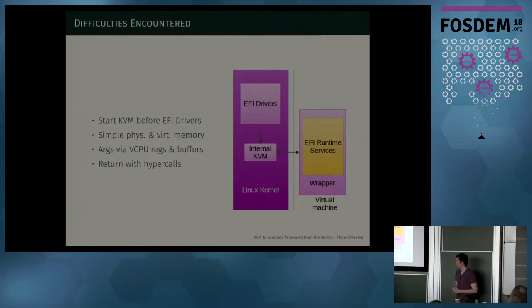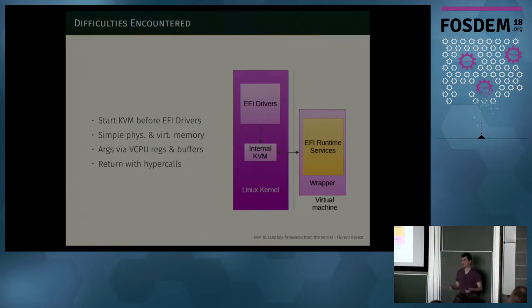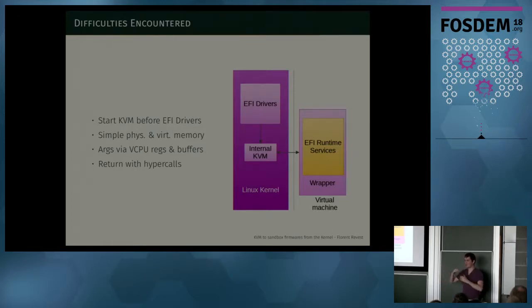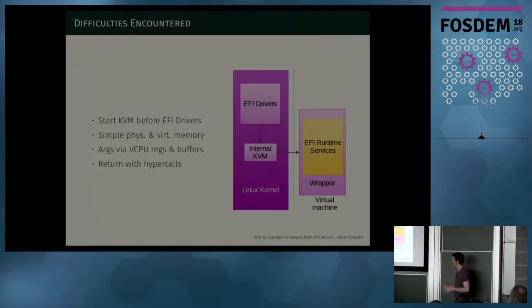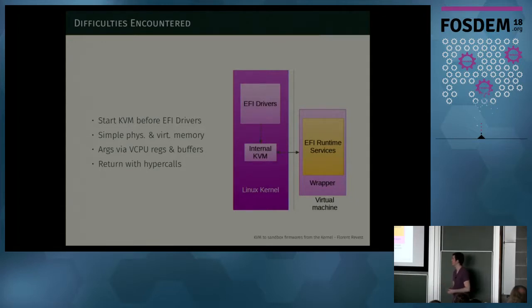Since they only have access to a virtual CPU, they can't touch the system registers of our kernel. That caused several problems. First, EFI is meant to run very early in the boot process, while KVM is meant to run very late — so a bit more refactoring to run KVM earlier and EFI later. There are also many address spaces to handle: the hypervisor's, the host kernel's physical address space, and the virtual machine's physical and virtual address spaces. I kept a direct mapping between the host physical address space and the virtual machine's physical address space, and the virtual machine uses the same virtual address space as the host kernel.